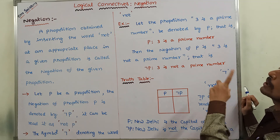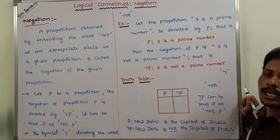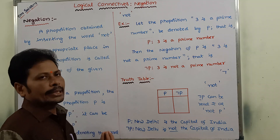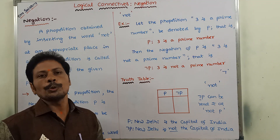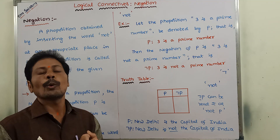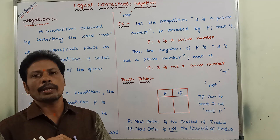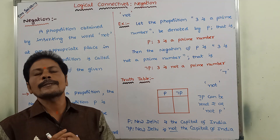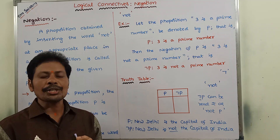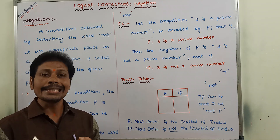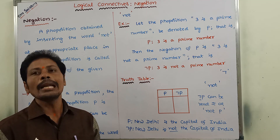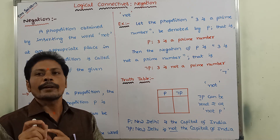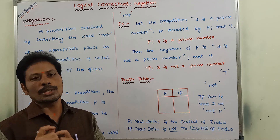Now, what is the truth table of the negation connective? In the negation connective, we consider only one proposition. Among all five connectives — conjunction, disjunction, conditional, biconditional, and negation — negation can be used for a single proposition.